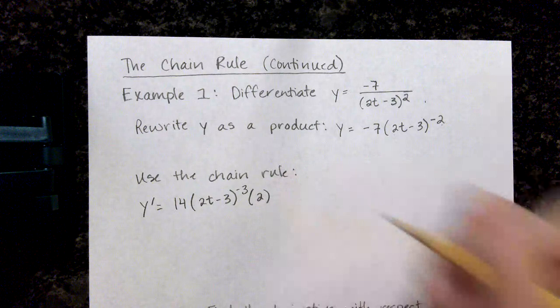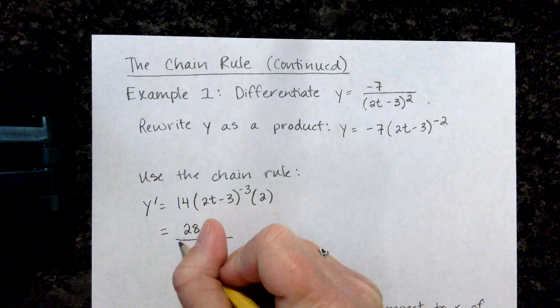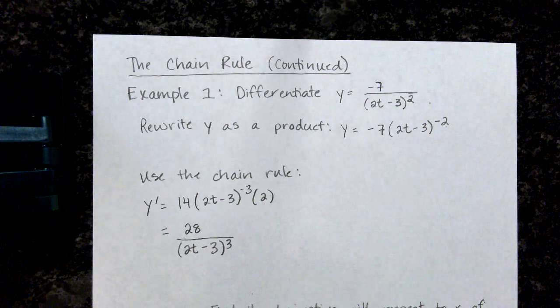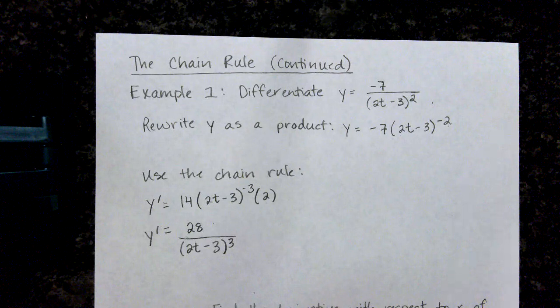When I simplify, 14 times 2 would be 28 and I'm going to rewrite my negative exponent as a positive exponent by moving it to the denominator. So my derivative of my given function y is 28 over the expression 2t minus 3 cubed.